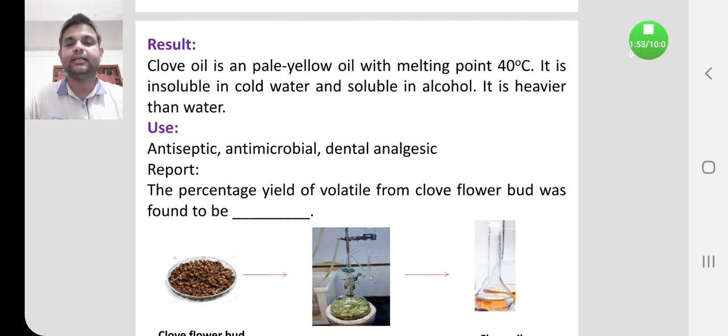It is also used as a GIT stimulant, aromatic, and flavoring agent. These are the medicinal properties of clove oil. Now we have to report the percentage yield of volatile oil from clove flower bud.